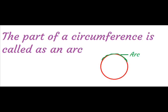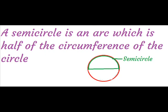The part of the circumference is called an arc. A semicircle is an arc which is half of the circumference of the circle.